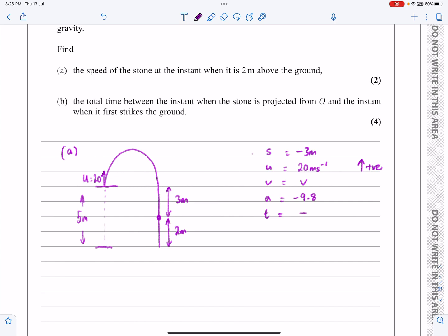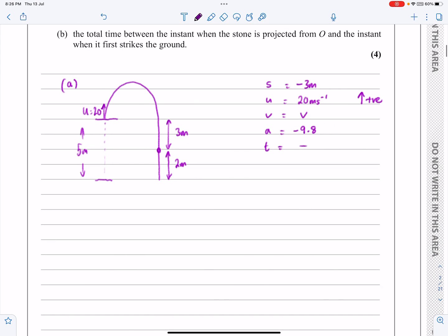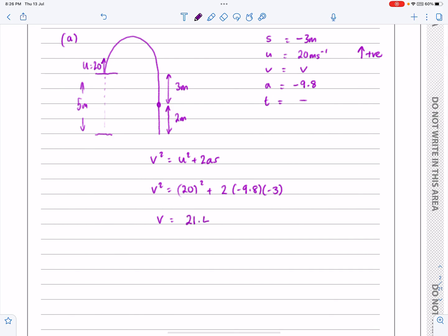So the formula that connects S, U, V, and A is V squared equals U squared plus 2AS. And we can just substitute everything in now. So V squared is going to be equal to 20 squared plus 2 lots of minus 9.8 and minus 3 there. Substitute all that in and square root it, and we get that V works out to be equal to 21.4.